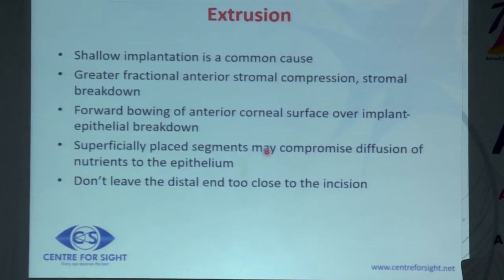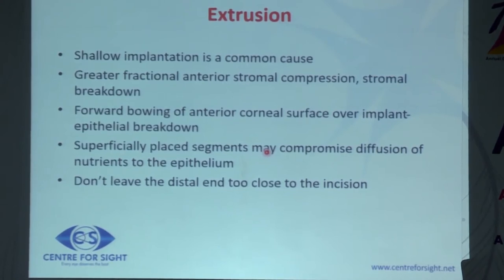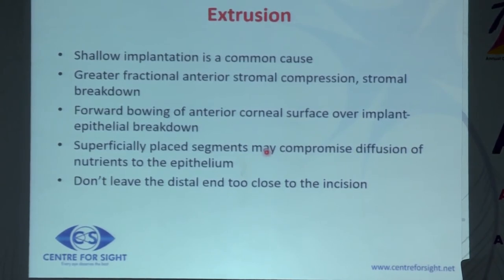Post-operatively, sometimes there is an overlying stromal melt. The intacs segment must be placed about 2mm into the incision site to avoid extrusion, at about 70 to 80% depth. Both tips of the rings should not touch each other, as contact can cause torque, twisting, upward migration, and increased chances of stromal melt.